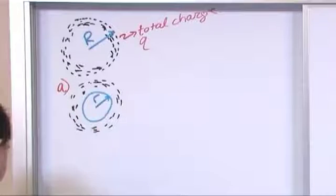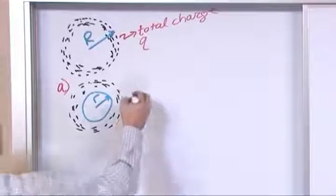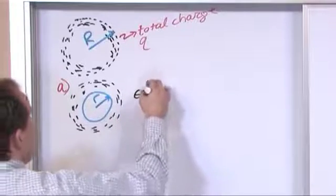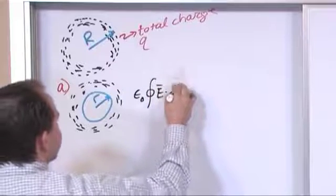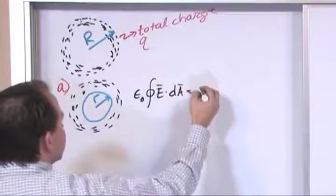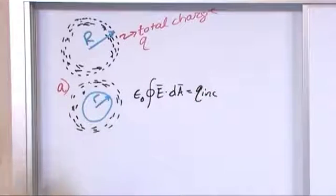Gauss's law you apply just like you would think. It's the permittivity times the surface integral of the electric field dotted with dA, and that's equal to the included charge, the charge included inside of this little spherical shell.